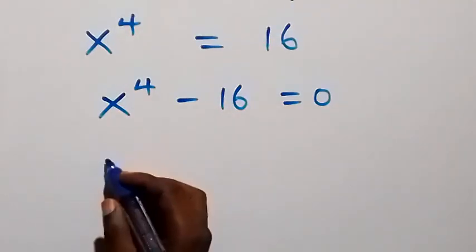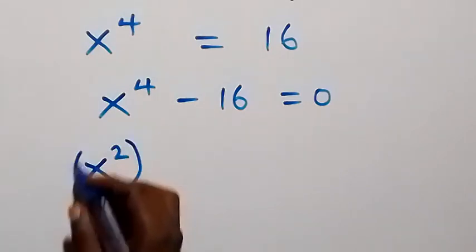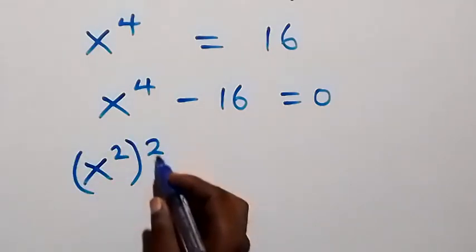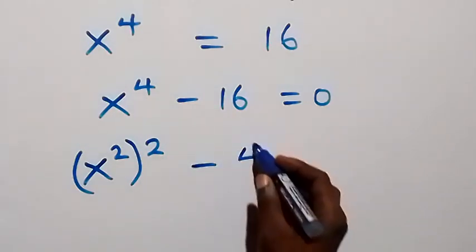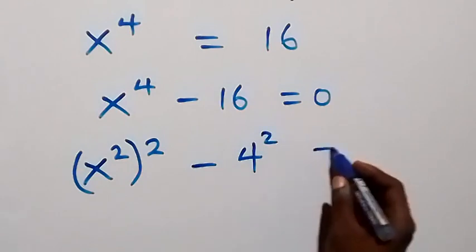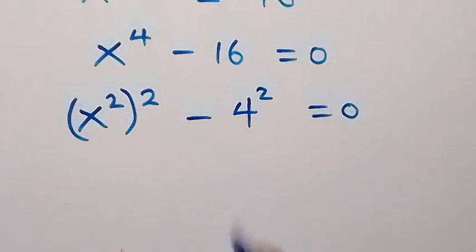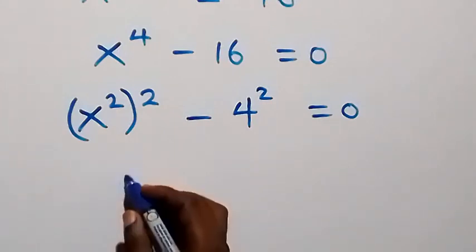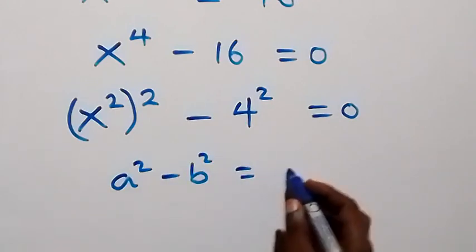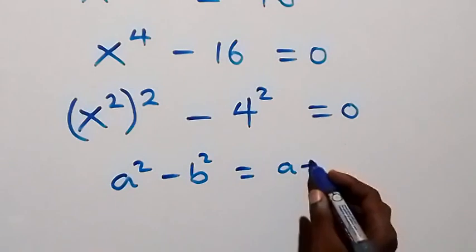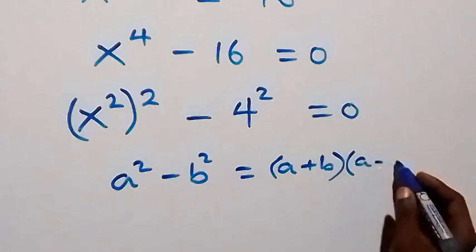From here we can rewrite x raised to power 4 as x squared, then squared. We can write 16 as 4 squared, equals zero. This follows from the perfect square form where we have a squared minus b squared, which can be written as a plus b multiplied by a minus b.